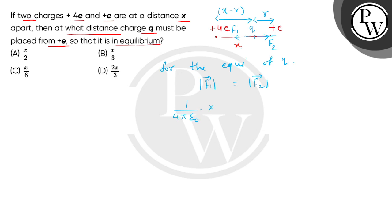Then e multiplied by q divided by r squared, and this is equal to 1/(4πε₀) multiplied by 4e multiplied by q divided by (x minus r) squared.